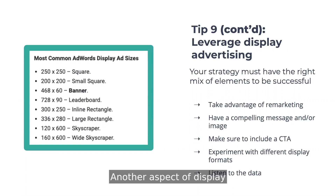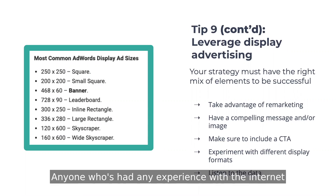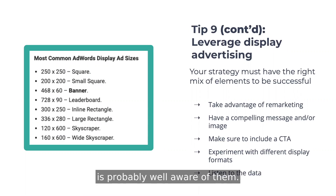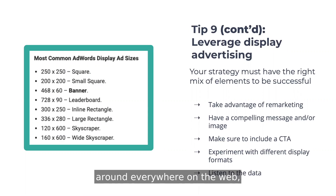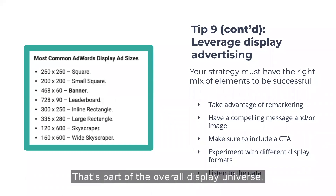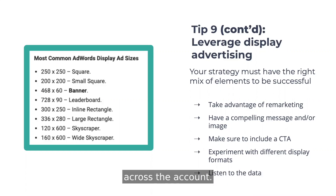Another aspect of display that's very powerful is remarketing — these are like the ads that follow you. Anyone who's had any experience with the internet is probably well aware of them. Amazon does a lot of this; if you've shopped a particular product and then notice it following you around everywhere on the web, that's what remarketing is. It's part of the overall display universe and it definitely helps improve the conversion rate across the account.